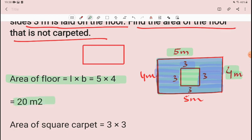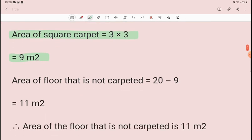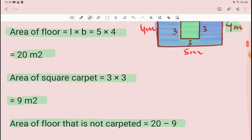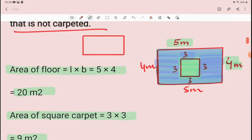20 meter square is the entire rectangle area. The carpet which is placed inside this square, because it is 3 into 3, so area of square carpet is 3 into 3 or 9 meter square. Now we will minus the area. Area of floor that is not carpeted is equal to 20 minus 9. Area of floor that is not carpeted is 11 meter square.